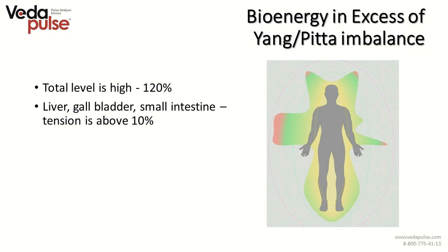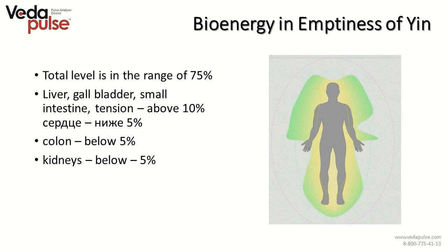Bioenergy in the axis of Yang or Pitta imbalance: the level of energy is high; total level goes up to 120%. Systems of organs which are tense — as metabolic and regional blood flow centers — are liver, gallbladder, and small intestine, where tension is above 10%. In the empty syndrome by comparison, the first sign is total level in the range of 75%, with liver, gallbladder, and small intestine tension above 10%, and heart below 5%.